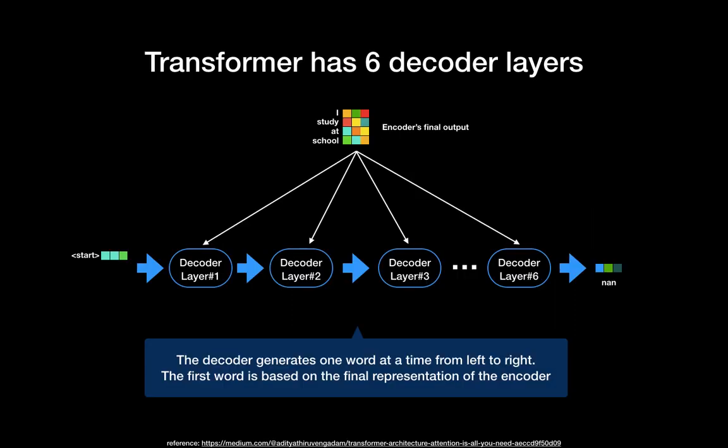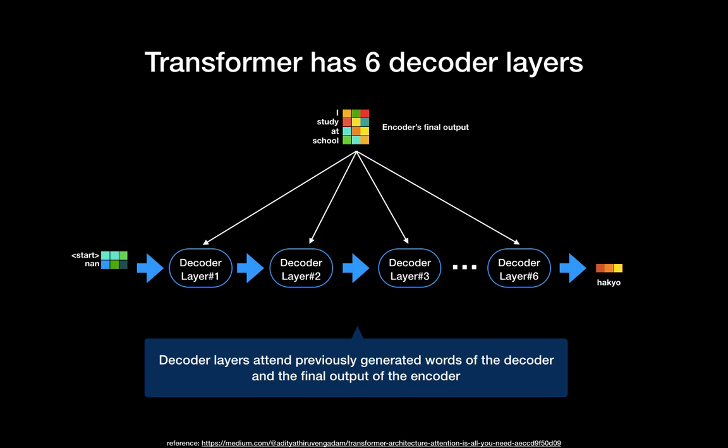So we are done with the encoder. Now let's talk about the decoder. We are almost there. You can see the decoder is very similar to the encoder in this bird's eye view. The decoder also has identical six stacks of layers. The decoder generates one word at a time from left to right. The decoder layers attend to the previously generated words of the decoder and the final output of the encoder.